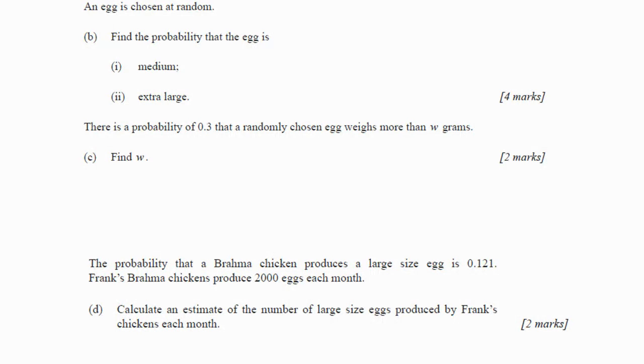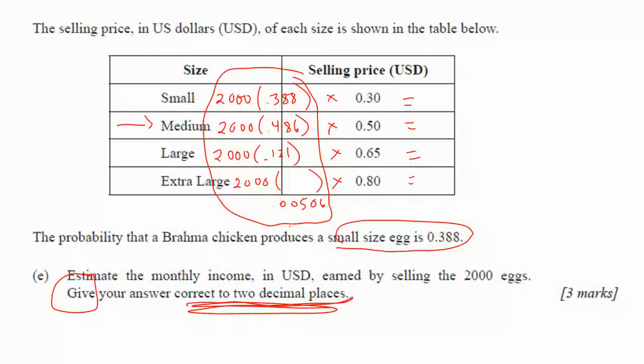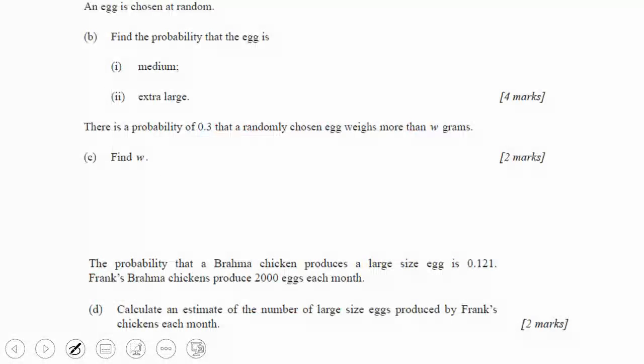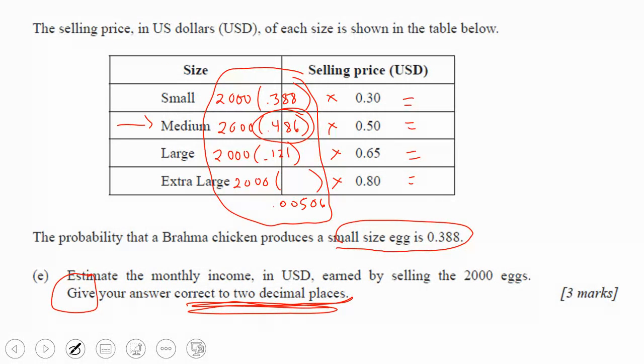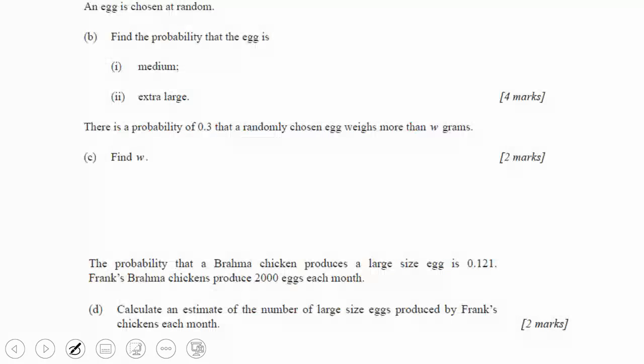So an egg is chosen at random. Find the probability. The egg is medium. Oh, we already did that. Extra-large, we already did that. So there's a probability of 0.3 that a randomly chosen egg weighs more than W-grams. That's the question we already answered. We kind of jumped ahead with that table.